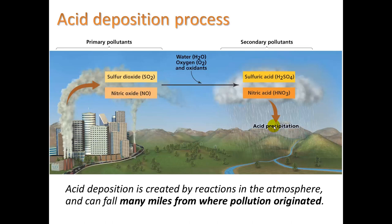Remember, a pH of seven is neutral. One key thing is that oftentimes where it's a problem — where the precipitation is falling — is many miles from where the pollution was formed. Keep in mind too that the higher up we can make the exhaust go, the more easily it will get into the upper wind and be distributed away from the city, but still causing major problems away from the city.